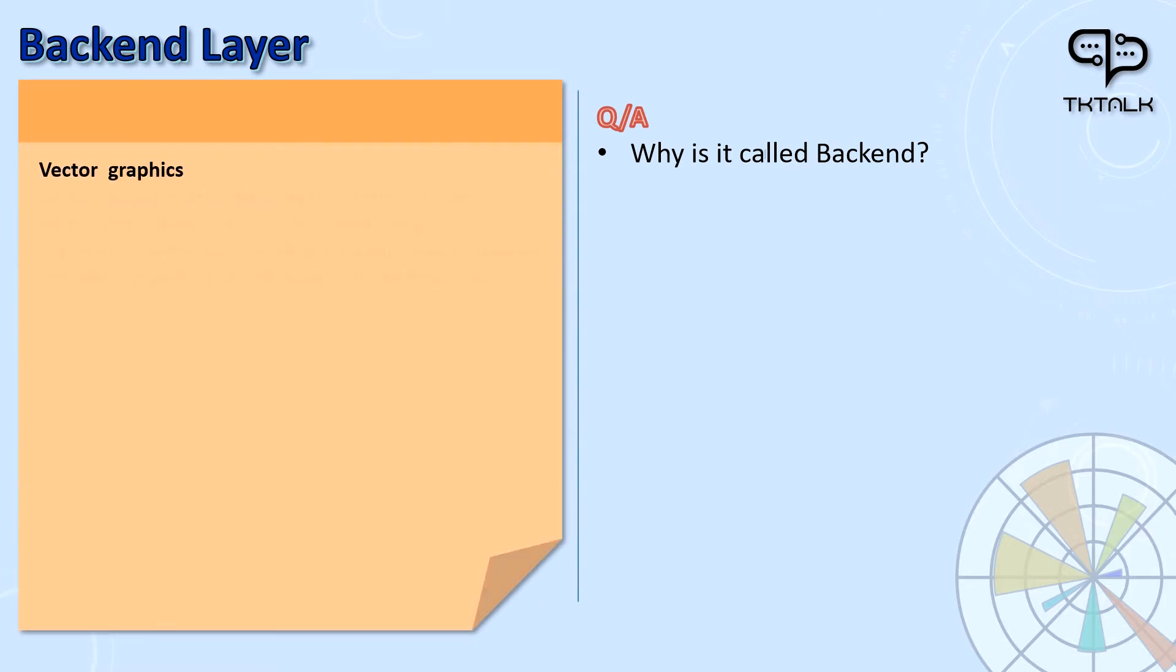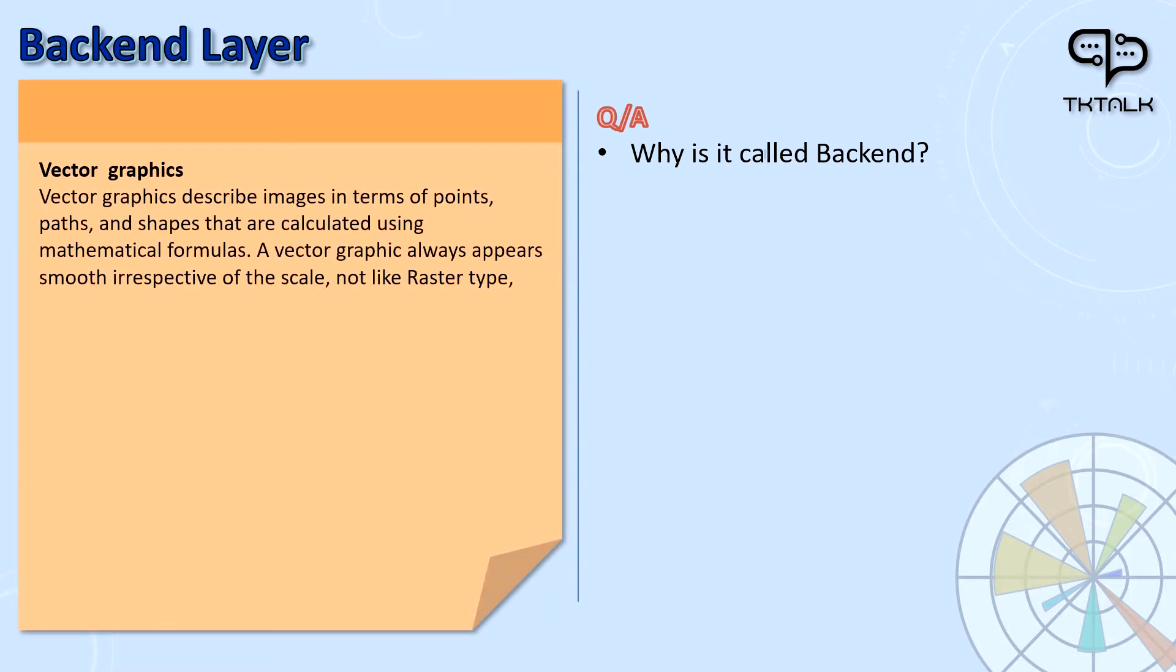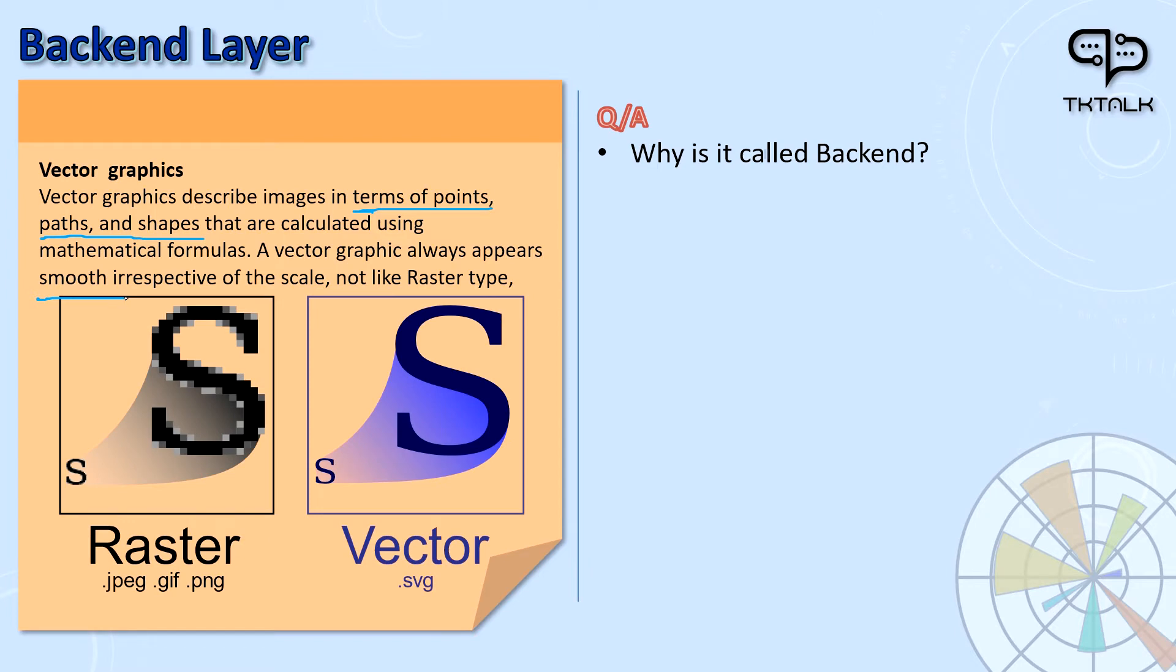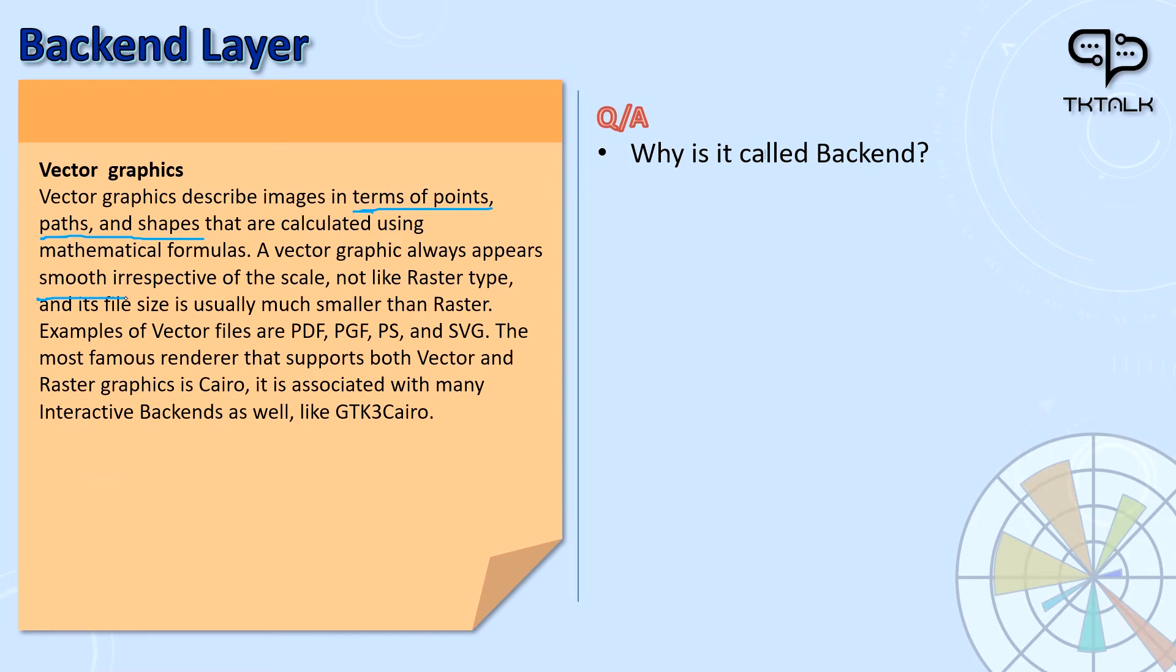Vector graphics, on the other hand, describe images in terms of points, paths, and shapes that are calculated using mathematical formulas. Therefore, vector graphics will always appear smooth irrespective of the scale, not like raster type, and its size is usually much smaller than raster as well.